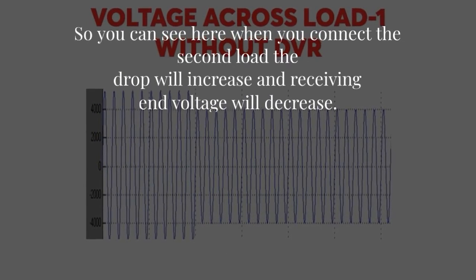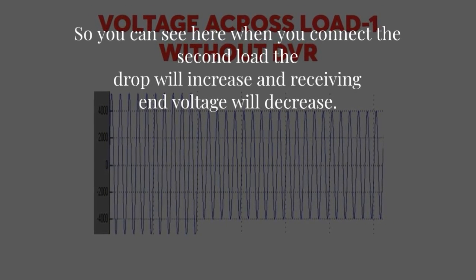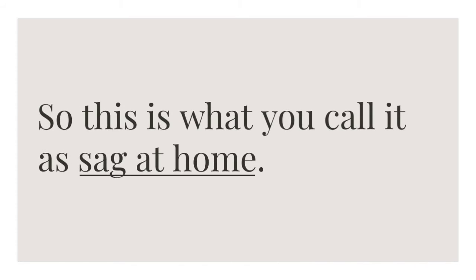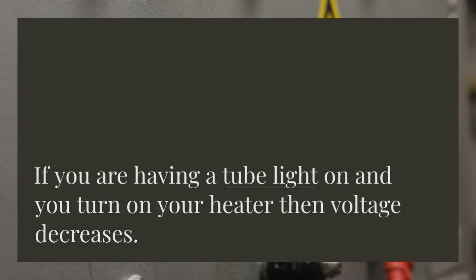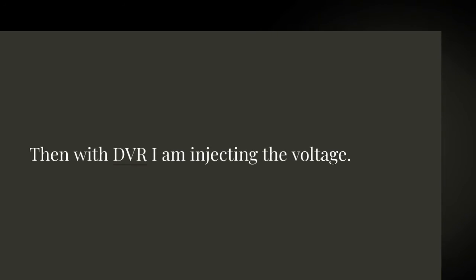So you can see here when you connect the second load the drop will increase and receiving end voltage will decrease. So this is what you call it as SAG. At home if you are having a tube light on and you turn on your heater then voltage decreases.